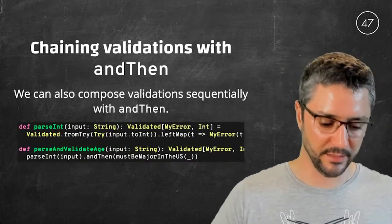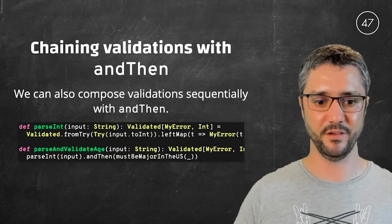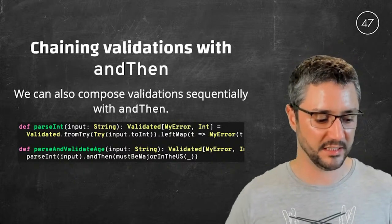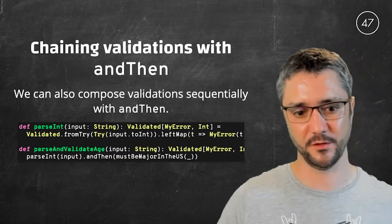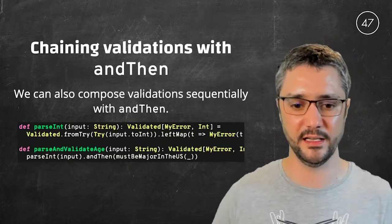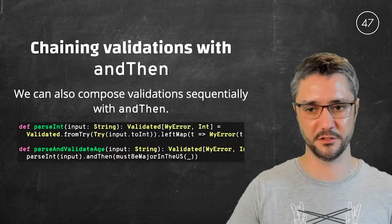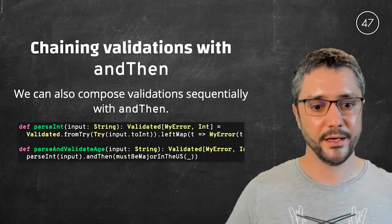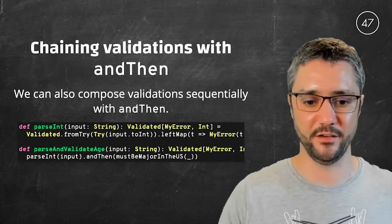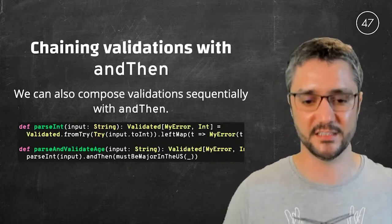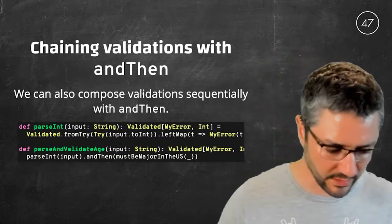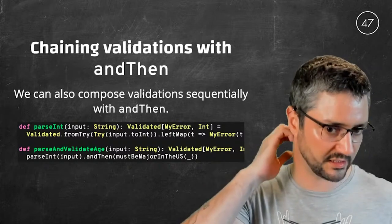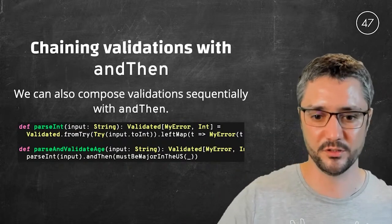Also, sometimes it doesn't make sense to do validations in parallel or independently from one another. For example, let's say we have an input that is a string and we must first parse it into an integer and then check something on this integer value. If the string doesn't parse into an integer because it's not a number, it doesn't make any sense to then verify, for example, that this integer that doesn't exist is greater than 21. In such case, we can use the andThen operator on validation to sequentially compose some validations.